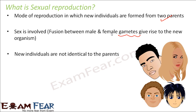In this type of reproduction, the new individuals which are formed are not identical to their parents. They might have similarities but they are not going to be exactly identical. Like you can always distinguish your friend from his father even though he has similarities with his father — the father and the son will look different, they will have their own identity. Some traits will be similar to parents, some traits will be new ones, and that is why we say that variations are seen in sexual reproduction.